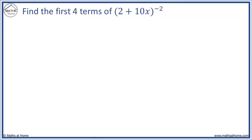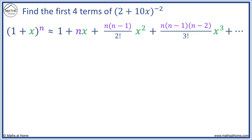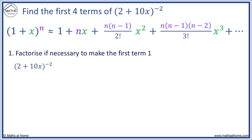For example, find the first four terms of (2 + 10x) to the power of negative 2. We always refer to the series expansion shown. Step 1: we have a 2 as the first term, and our rule only works if we have a 1 as the first term, so we must factorise the 2. Doing so, we halve the bracket to get 1 and 5x. Notice we still have 2 to the power of minus 2 — we always need to remember to raise this factor to the power as well. 2 to the minus 2 equals 1 quarter.